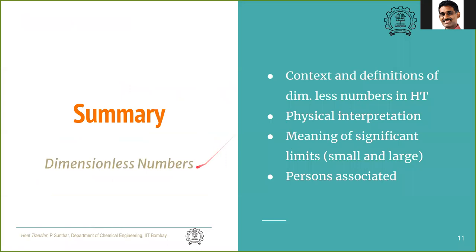To summarize, we saw the context and definition of various dimensionless numbers used in heat transfer. We showed the physical interpretation of each as a ratio of two different quantities, and we examined the magnitudes and limits of these dimensionless parameters — both small and large. We also noted the persons associated with each of these numbers.